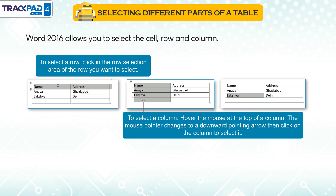To select a column, hover the mouse at the top of a column. The mouse pointer changes to a downward pointing arrow, then click on the column to select it.